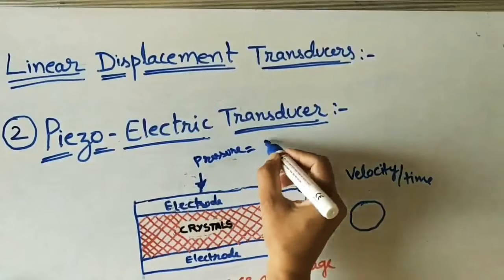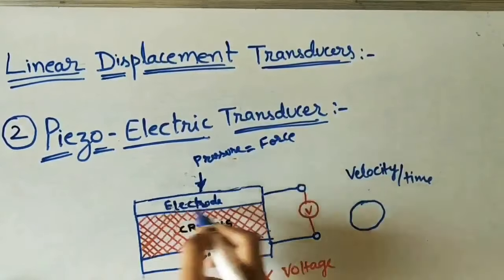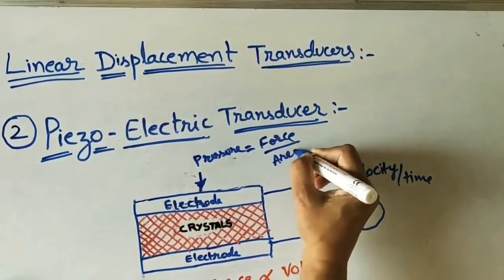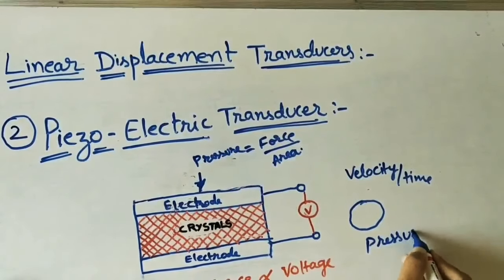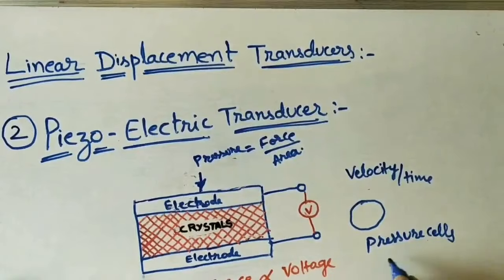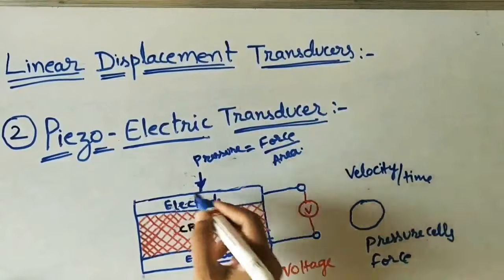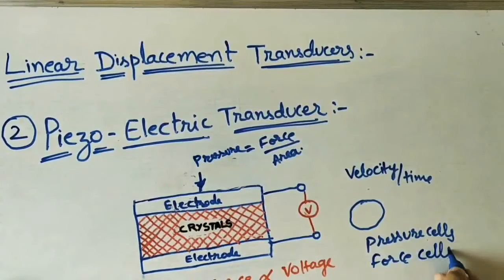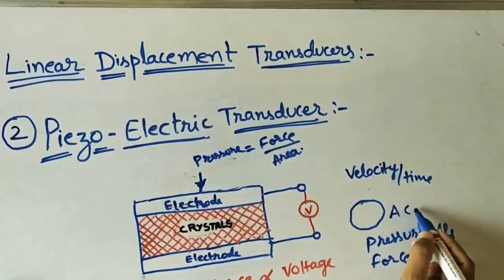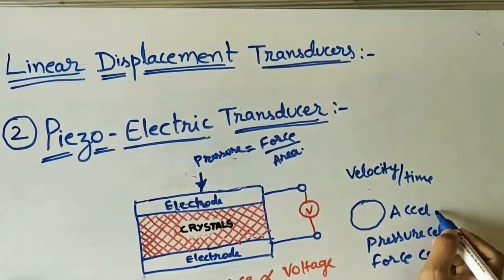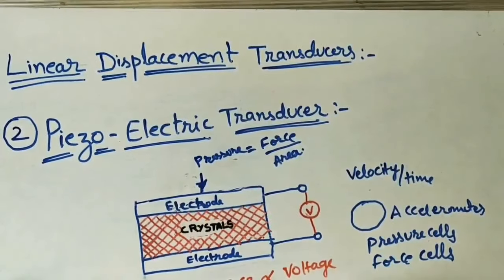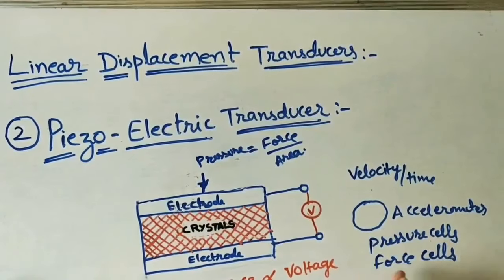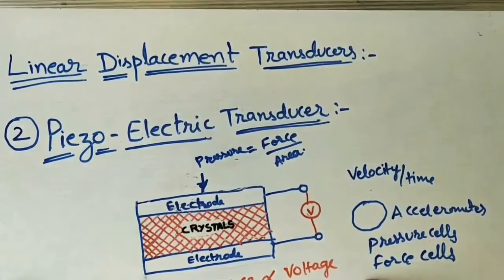We can use piezoelectric transducers in pressure cells for measuring pressure per area. Sometimes they are called force cells, where we measure force instead of pressure. So we can apply these cells for finding displacement, acceleration, pressure, and force values.